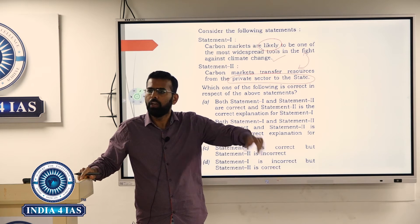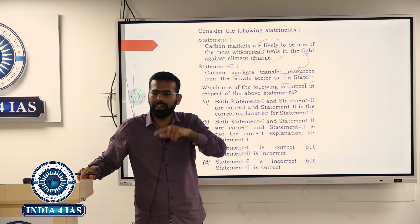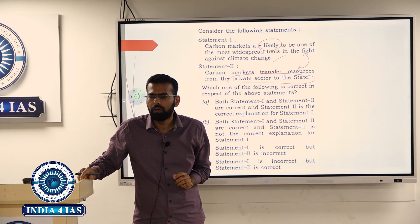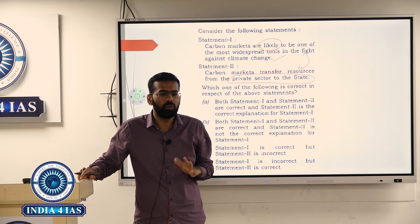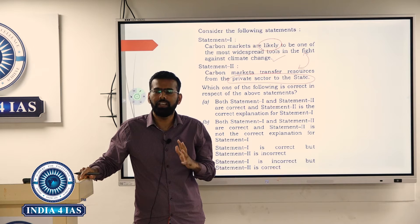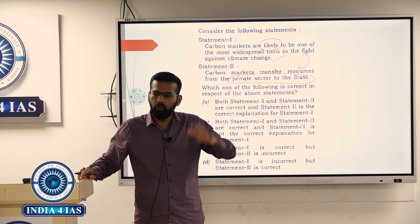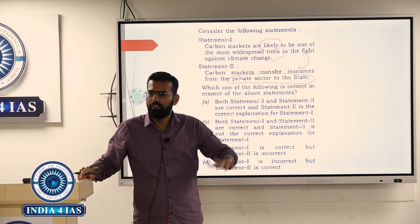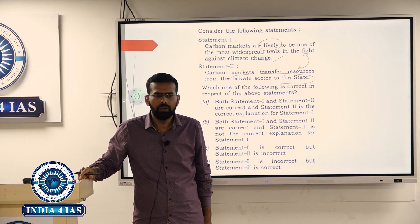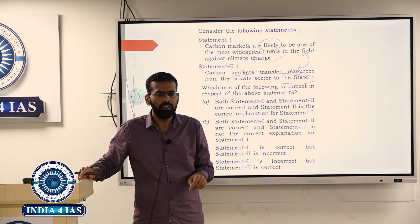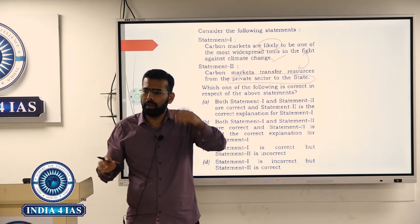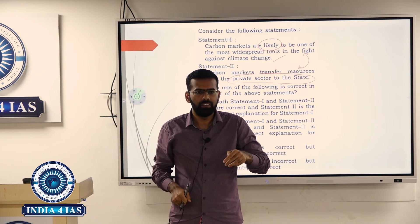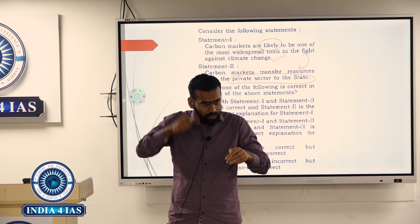Procedure established by law is about the procedure followed in bringing a law — what the legislature makes. Due process of law means it checks whether the law is fair and just. The extra element in due process of law — compared to procedure established by law — is checking the fairness or justice of the law.